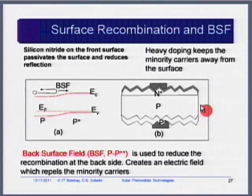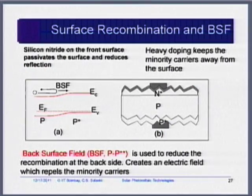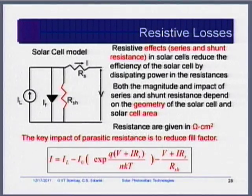So we have created a back surface field. Our solar cell now has texturing, anti-reflective coating, and back surface field. Anti-reflective coating and texturing increase current; surface passivation minimizes recombination for higher open circuit voltage; and minimizing resistive losses improves fill factor.